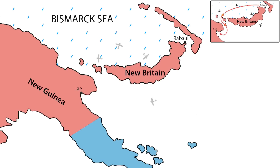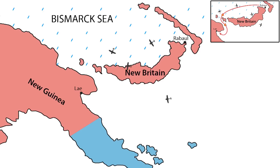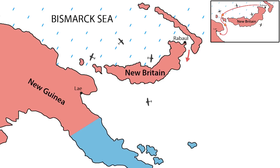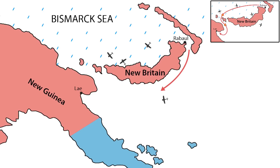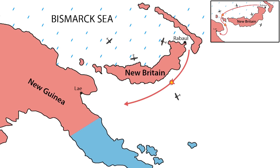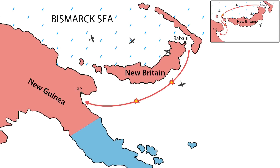The second scenario shows the U.S. Air Force's focus on the northern part of New Britain, but in this case the Japanese take the southern route. Because of limited reconnaissance south of the island, the convoy could be missed during the first day, allowing once again for two days of bombing.